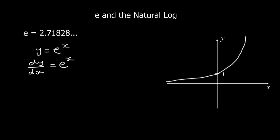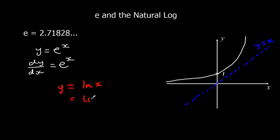The inverse of y = e^x — the inverse of e — is ln. An inverse is a reflection in the line y = x. So y = ln x, which means log base e of x. You'll see ln x written a lot and that means log base e of x.